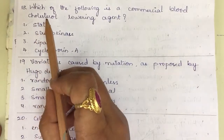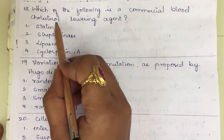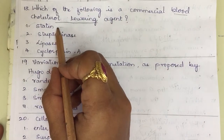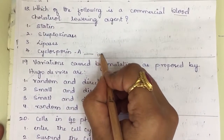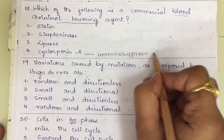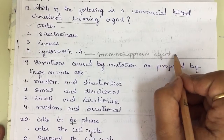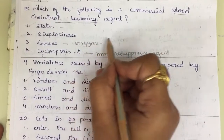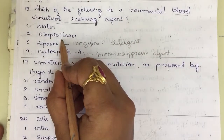Question 18: Which of the following is a commercial blood cholesterol-lowering agent? The options are statin, streptokinase, lipases, and cyclosporin A. Cyclosporin A is used as an immunosuppressive agent in organ transplant patients, and it is produced by Trichoderma polysporum. Lipases is an enzyme used in detergents to remove stains.